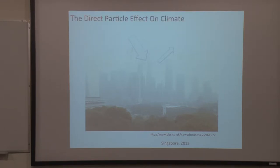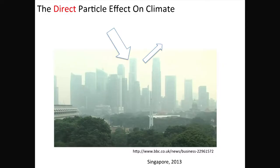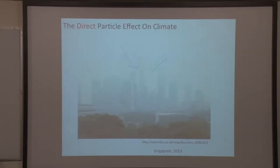This is what scientists call the direct effect of particles — their direct impact on radiation. You might say particles are natural, but these are not natural particles. These are fires that were set to clear land, specifically peat bogs, so they could be used for agricultural purposes. These are fires set by humans for land use changes, and these are particles participating in the radiative balance only because of us.